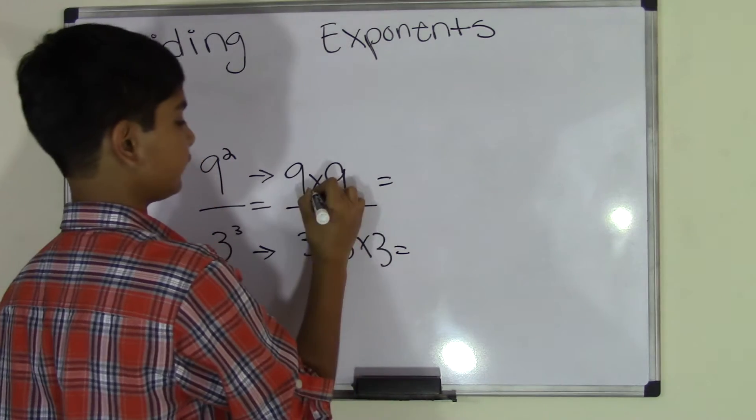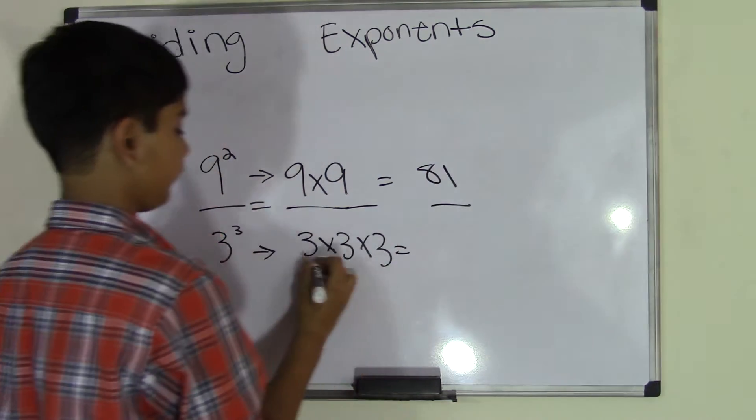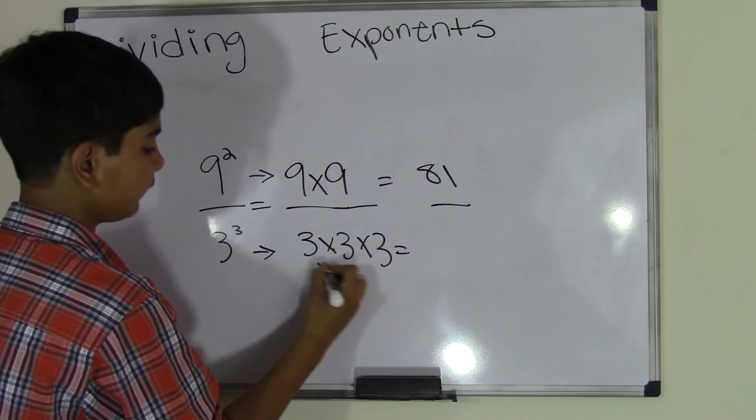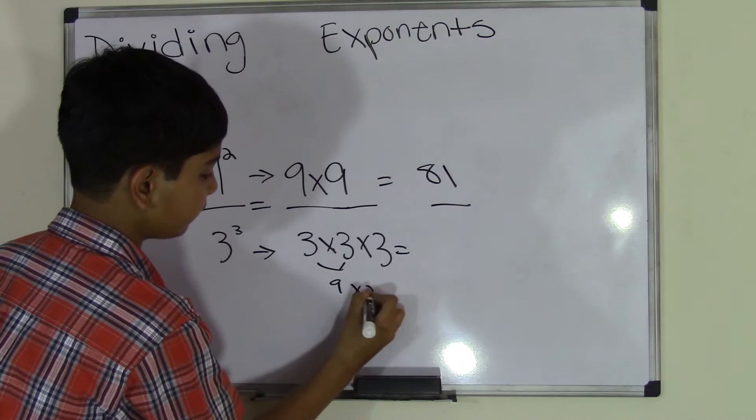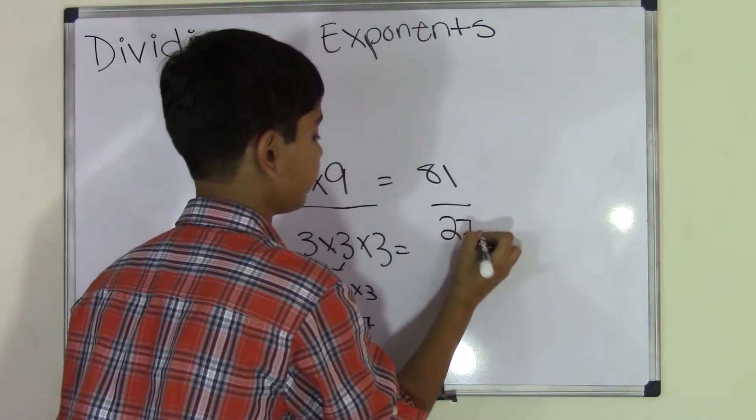And we get the answer of 9 times 9 is 81. And 3 times 3 is 9, which times 3 is 27. So we get 81 upon 27.